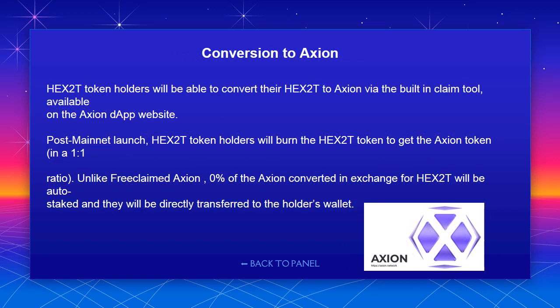Conversion to Axion: Hex 2T token holders will be able to convert their Hex 2T to Axion via the built-in claim tool available on the Axion DApp website. Post mainnet launch, Hex 2T token holders will burn the Hex 2T token to get the Axion token in a 1-to-1 ratio. Unlike free claimed Axion, 0% of the Axion converted in exchange for Hex 2T will be auto-staked — they will be directly transferred to the holder's wallet.